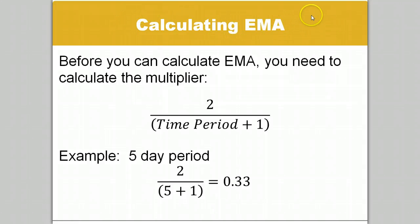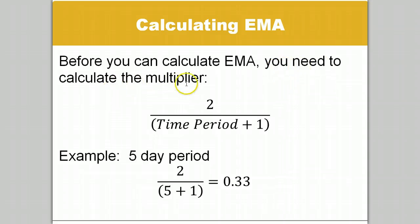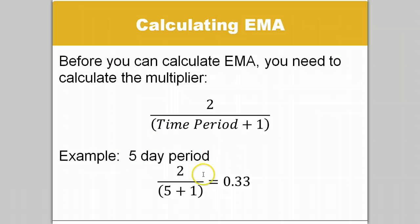Calculating an EMA is a little more complicated than calculating an SMA, as the name alludes to — simple versus exponential. To begin, we have to calculate the multiplier, which is the exponential factor that will be applied to the historical data. To do this, we divide 2 by the time period plus 1. So for a 5-day EMA, we would divide 2 by 5 plus 1, or 6, to get 0.33.